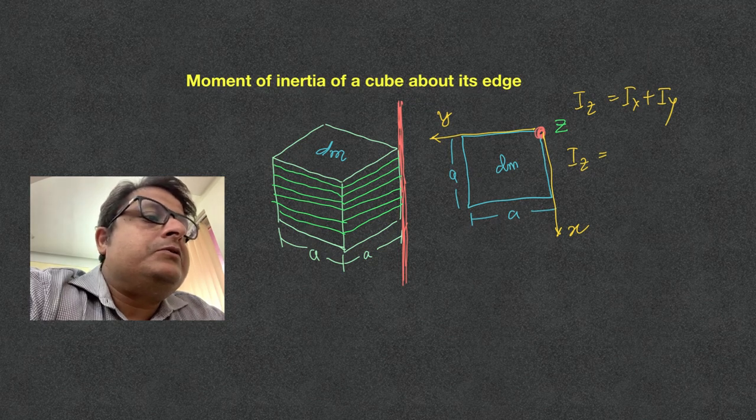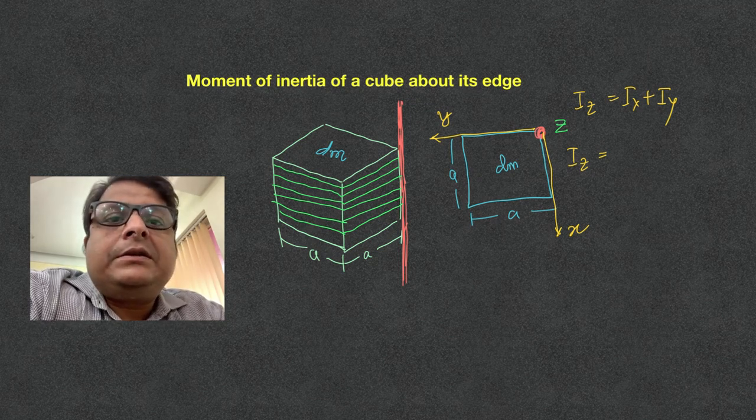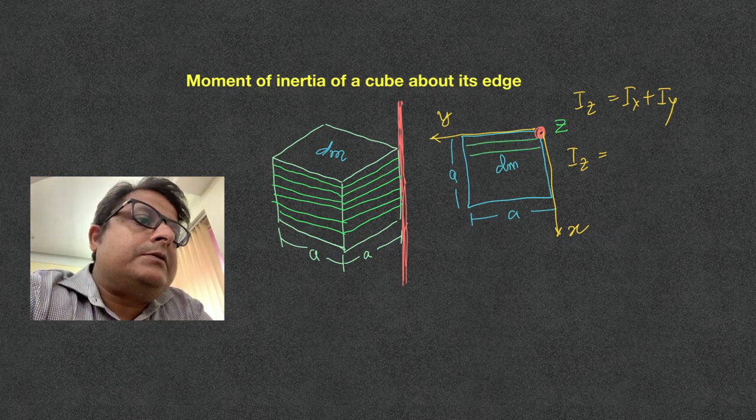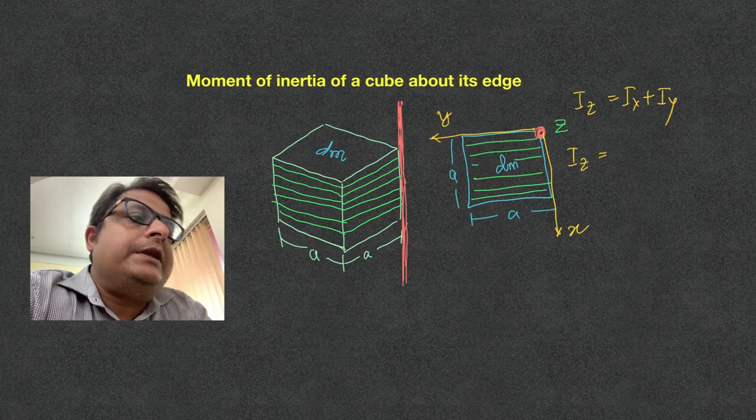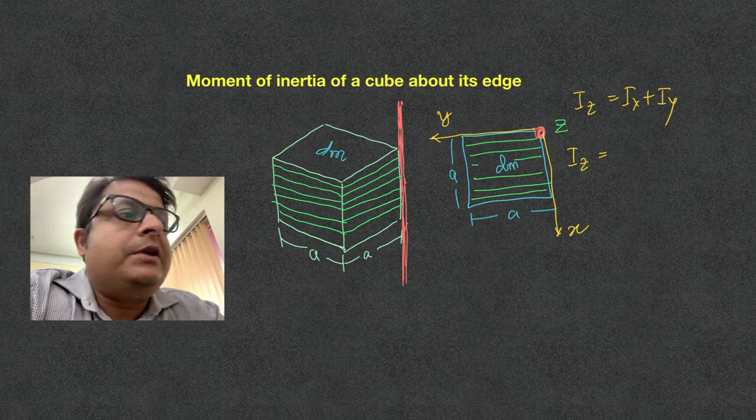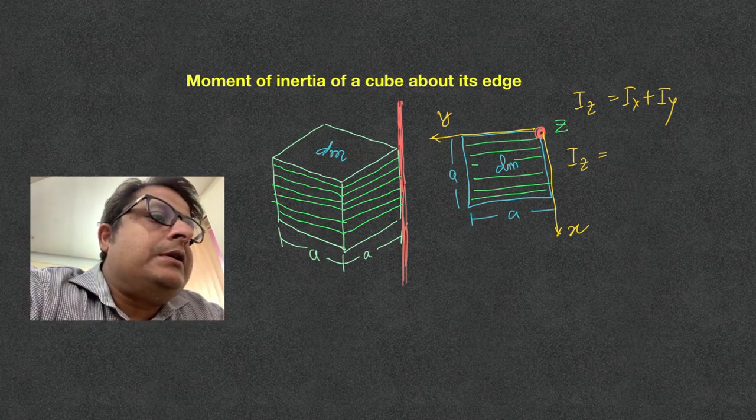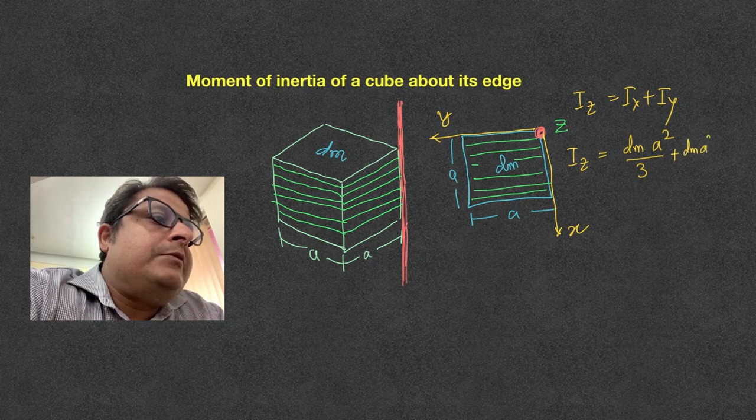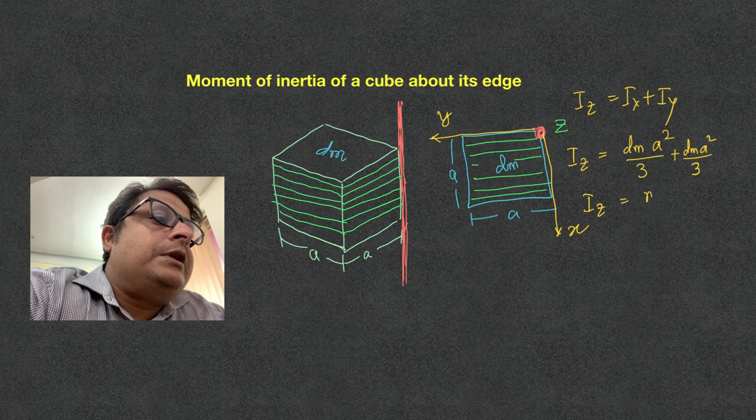About the x-axis, I can split up this square plate into rods, each of length A. So it will be same as that of a rod. Iz is dm into a square by 3 plus again dm into a square by 3. So Iz is equal to dm a square by 3. Now just to add it for this thing.